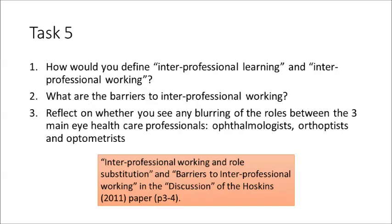Moving on to Task 5 after your reflective task: read the sections titled Interprofessional Working and Role Substitution and Barriers to Interprofessional Working in the discussion of the Hoskins paper. Firstly, how would you define interprofessional learning and interprofessional working? What are the barriers to interprofessional working? And thirdly, reflect on whether you see any blurring of roles between the three main eye healthcare professionals: ophthalmology, orthoptics, and optometry.